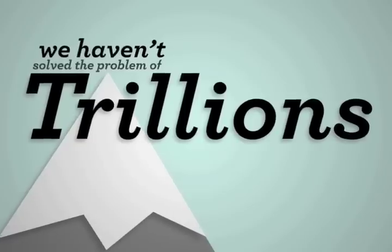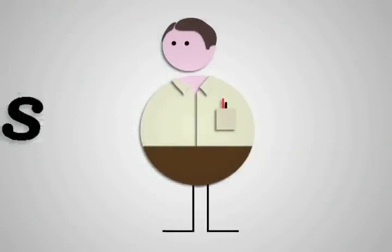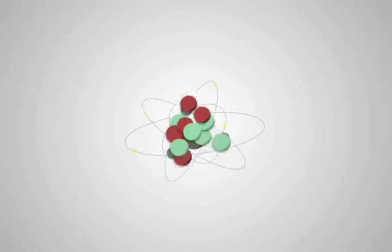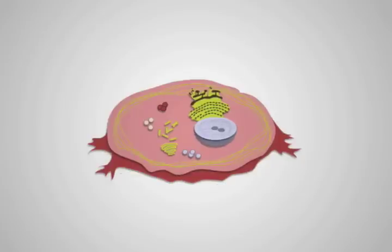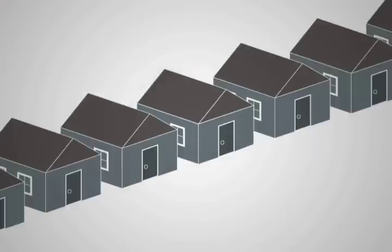But even though we haven't solved the problem of trillions, nature has. Your own body has trillions of cells. It's a complicated information system in its own right. In your body, you have atoms, which make up molecules, which make up cells, which make up organs, and those make up systems, which make up you, and then we together make up us, and groups of us make up communities.